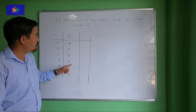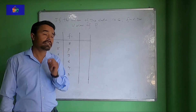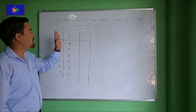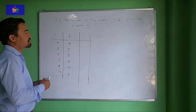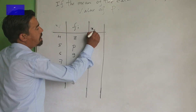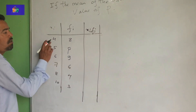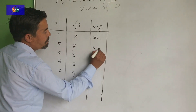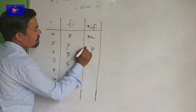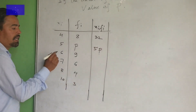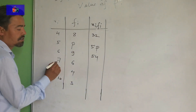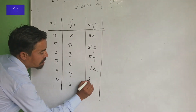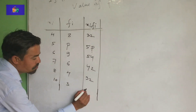The unknown p — the mean of the given data is 6. I am going to work through this. You are going to multiply: 4 times 8 is 32. 5 into p is 5p. 9 times 6 is 54. 7 times 6 is 42. 8 times 4 is 32. 10 into 3 is 30.